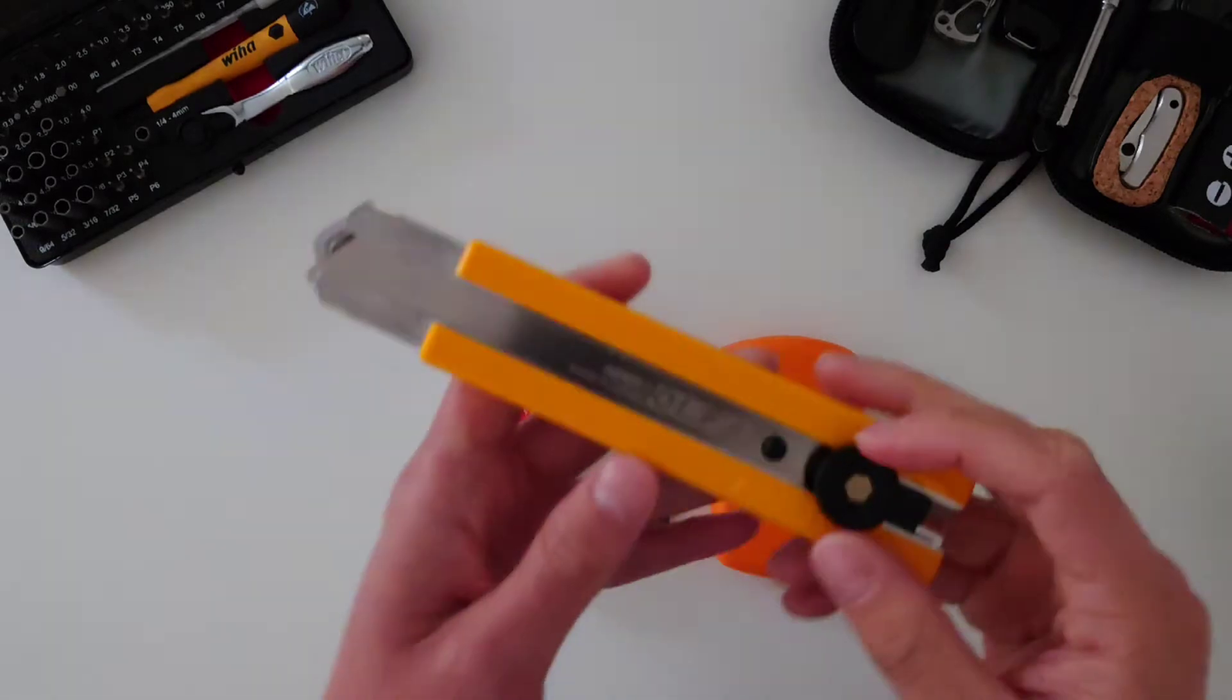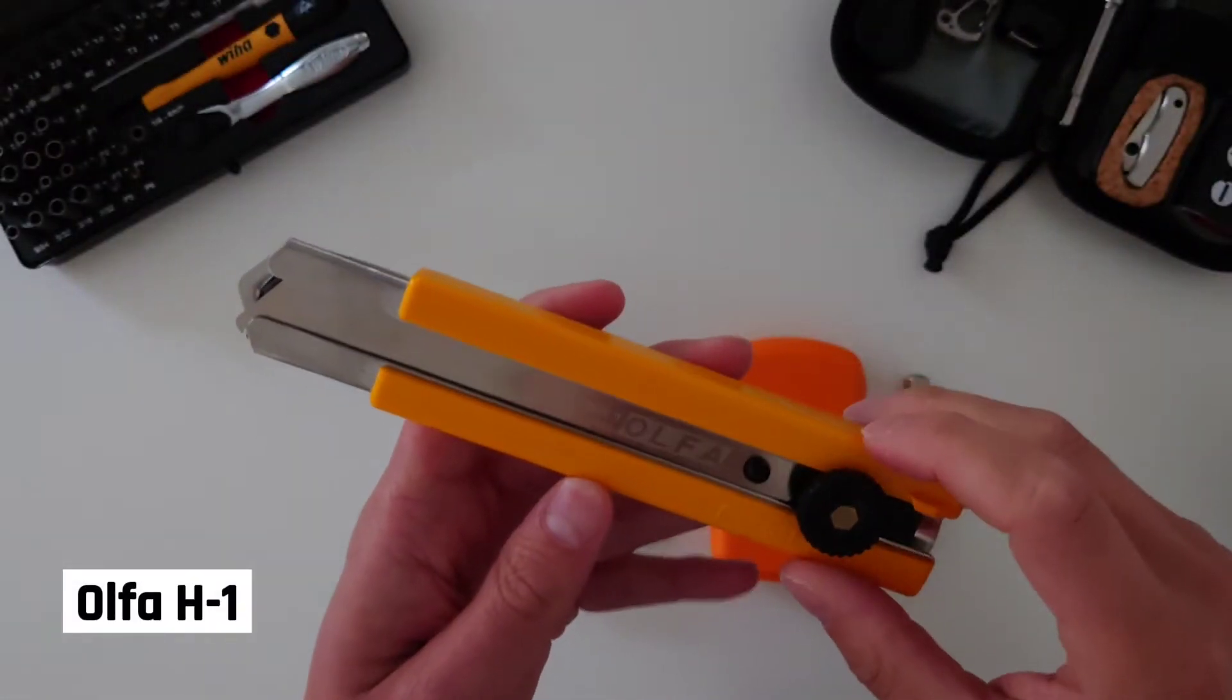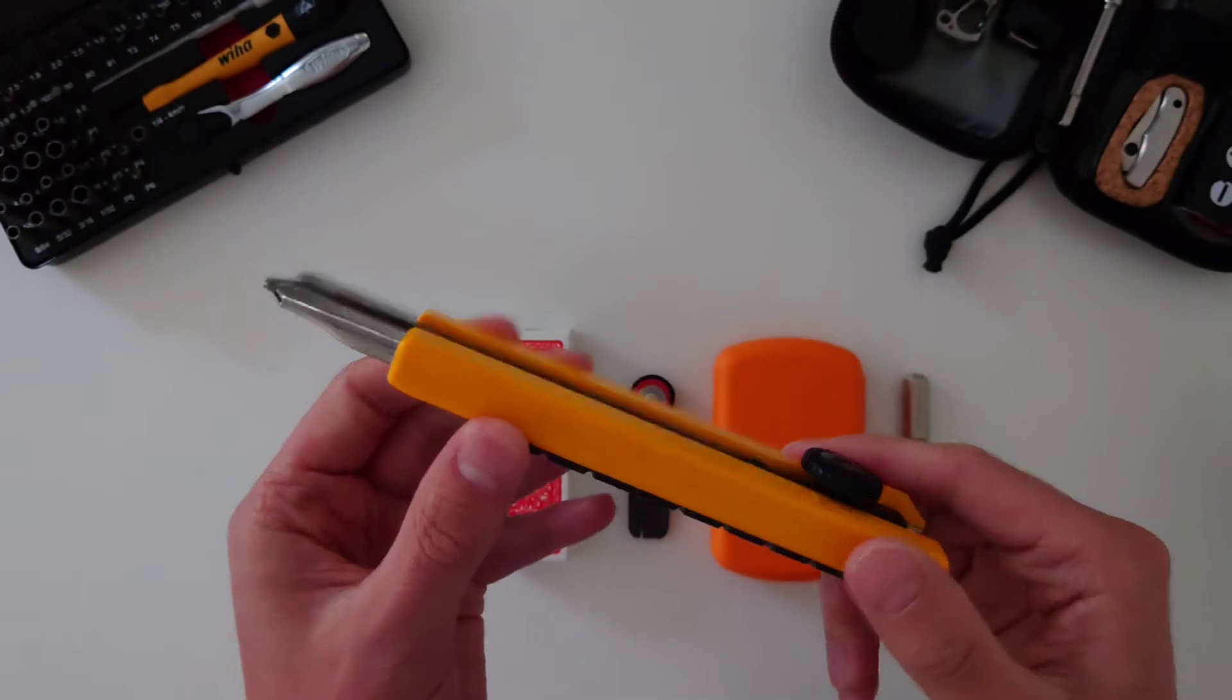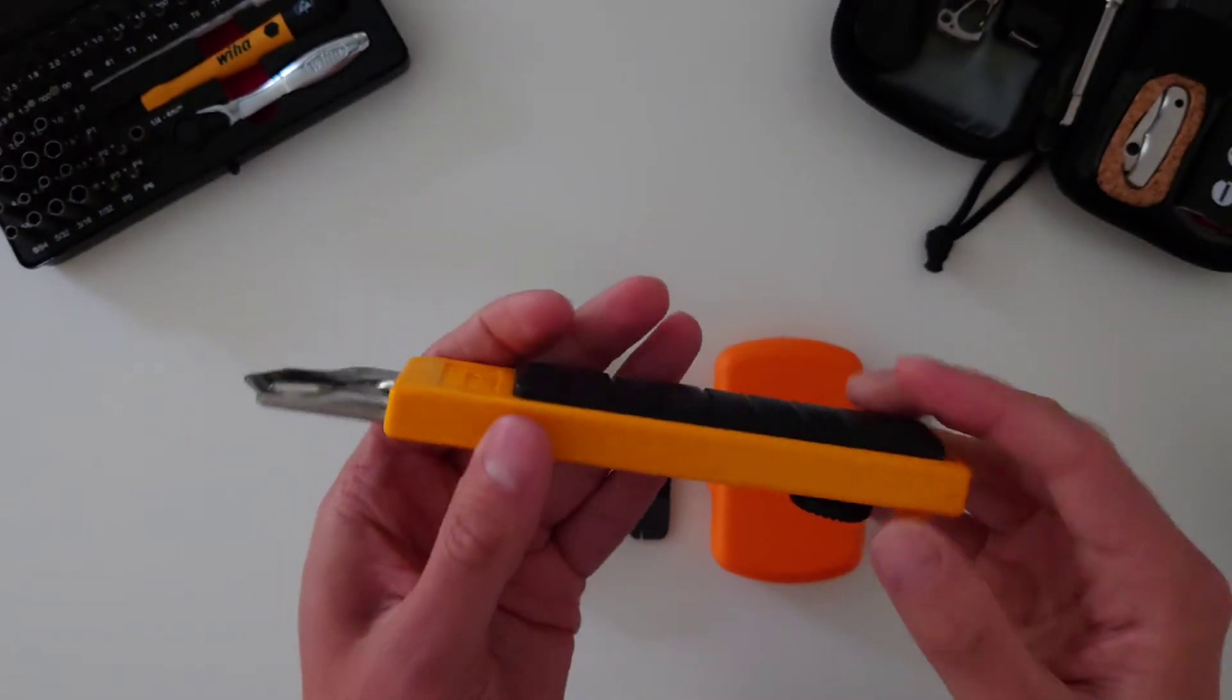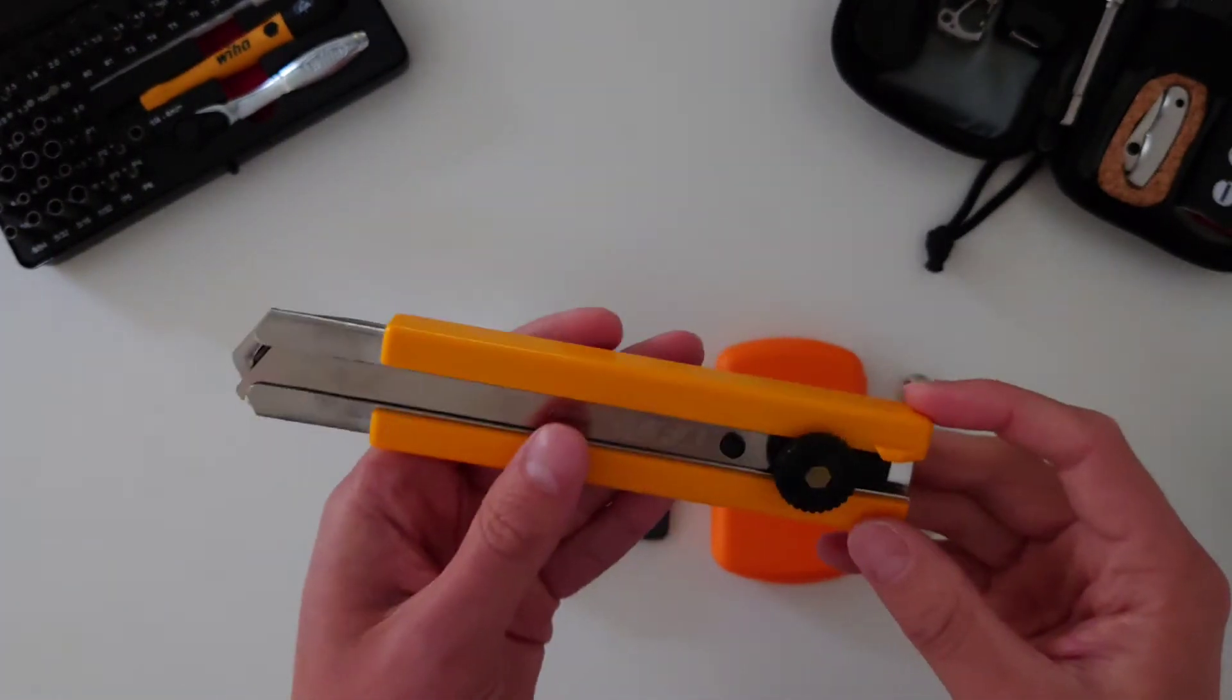The first item we're going to be looking at is the Ulfa H1. It looks like a standard 25mm snap knife body and in fact it is.